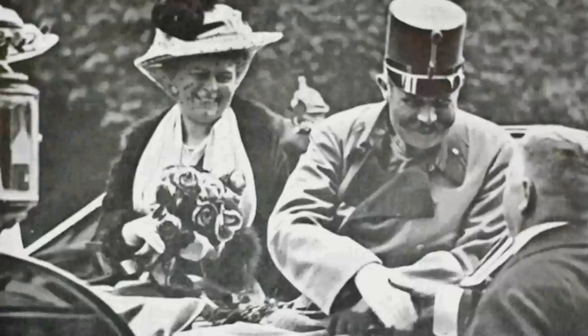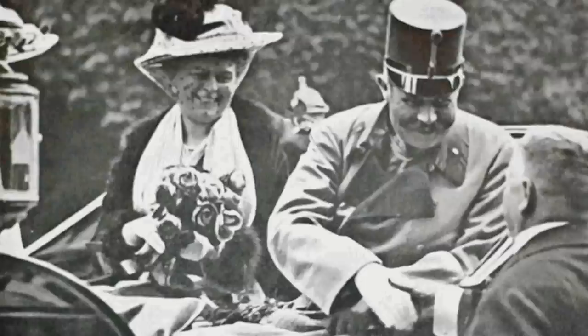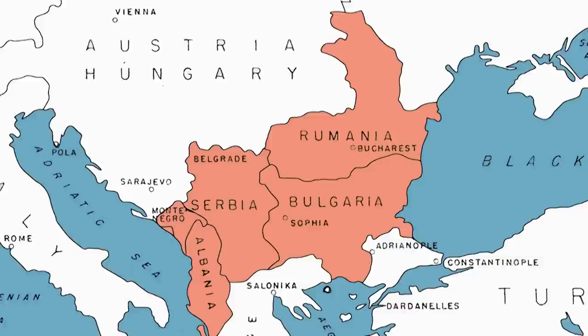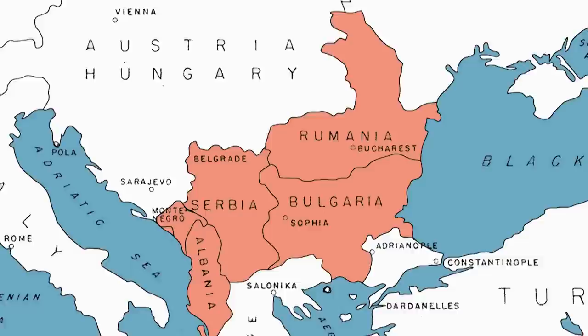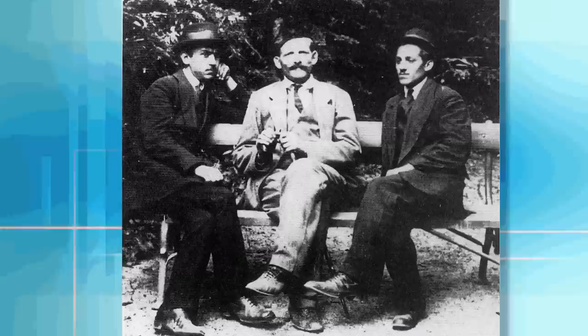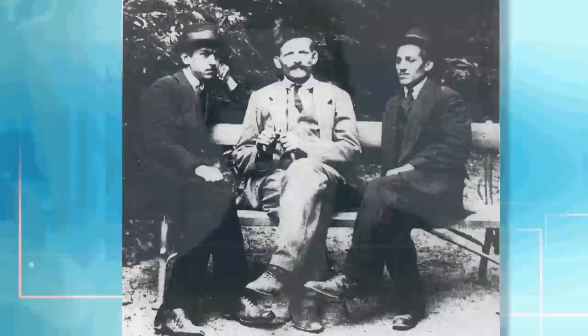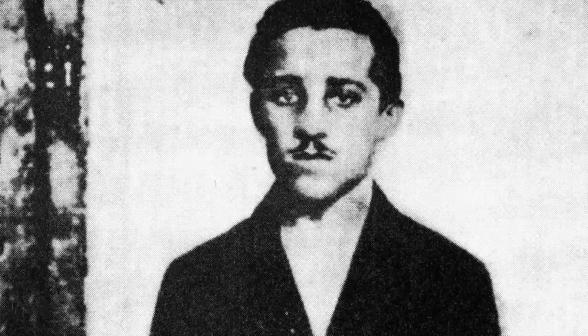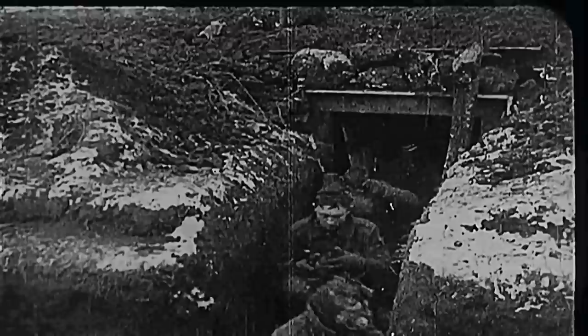It all begins in Sarajevo — the capital of the Austro-Hungarian territory of Bosnia-Herzegovina in the Balkan Peninsula. It is 28 June 1914, and Archduke Franz Ferdinand, heir to the Austro-Hungarian throne, is touring the Balkan city by motorcade with his wife Sophie. In an age of nationalism, the Balkans are a diverse conglomeration of ethnic and religious groups that for centuries have been dominated by the Ottoman Turkish and Austro-Hungarian empires. The decline of the two empires has made the divergent groups desperate for independence. One such group awaits the Archduke and his wife along their parade route, having conspired to kill them.